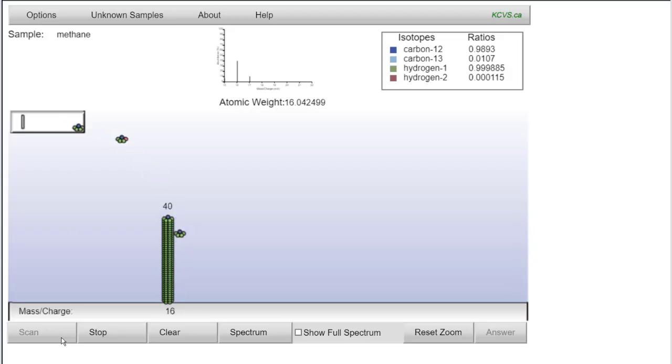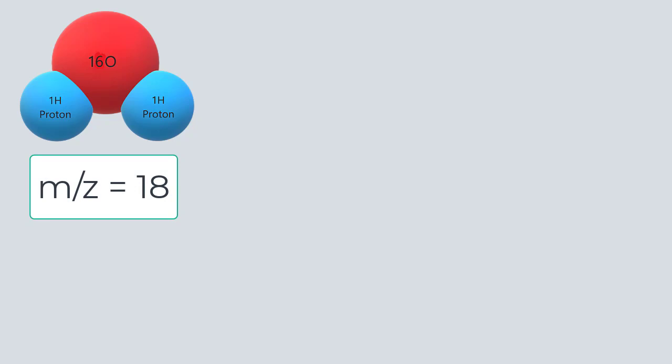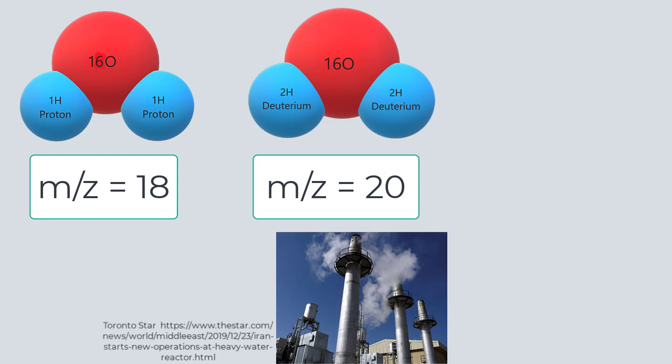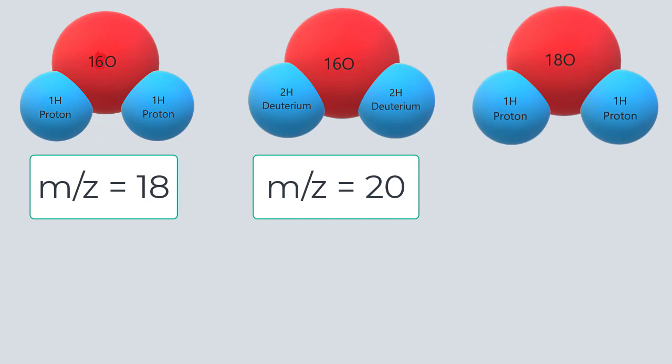You can tell isotopologues apart the same way you can tell apart isotopes, with a mass spectrometer. A water molecule with one oxygen-16 and two hydrogen-1 atoms, which are just protons with one electron, will display on the mass spectrometer with a unit mass to charge ratio of 18, while heavy water with an oxygen-16 and two hydrogen-2, or deuterium atoms, will have a mass to charge ratio of 20. This form of heavy water is sometimes used in nuclear reactors to keep chain reactions going. A heavier isotopologue of water could also be composed of an oxygen-18 atom and two protons, which would also have a unit mass of 20.